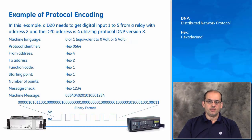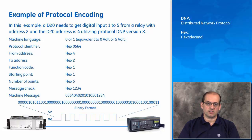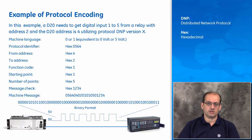In a substation with two devices — one acting as a master, like a D20 communicating to a UR relay — the D20 needs to get digital inputs one through five from a relay with address two, and the D20 address is four, using a preferred communication protocol. Let's say it's DMP protocol version X. I'm using an oversimplification of a DMP protocol because the real DNP protocol contains many features, as we'll explain later. This simplification helps our learning to understand how a protocol impacts messages transmitted between one IED and another.